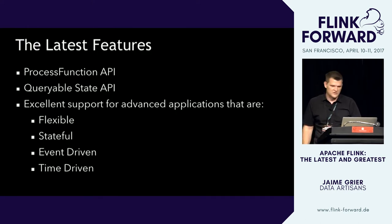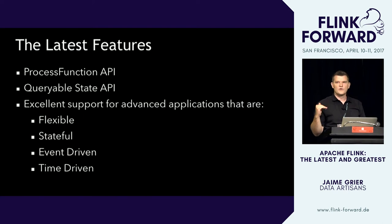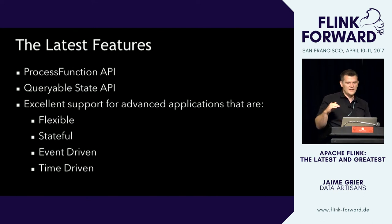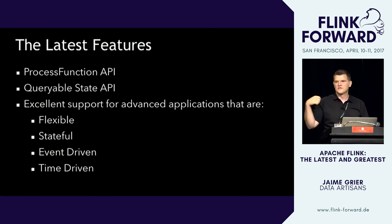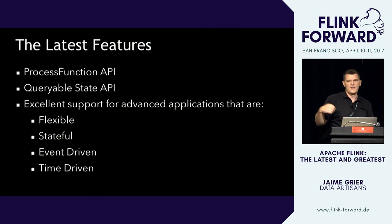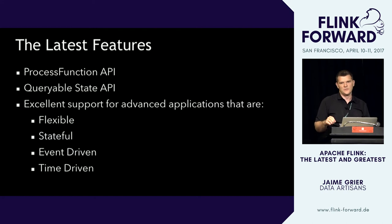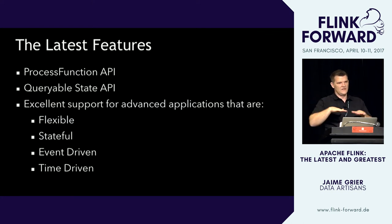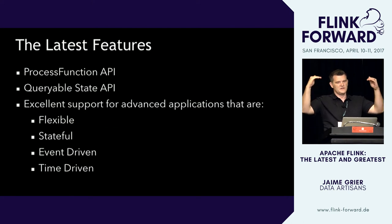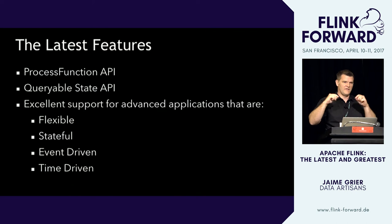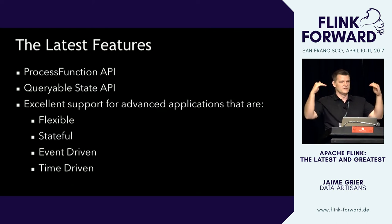Some of the latest features we're going to cover. One is called Process Function, which is a lower-level API in Flink — it's the core function that lets you process and consume events, update data structures that Flink manages fault-tolerantly, schedule things according to processing time or event time, and emit results either as input arrives or at some future time. On top of Process Function you have the DataStream API, then the Table API, and then Streaming SQL.